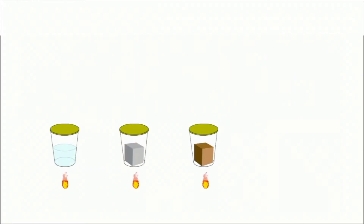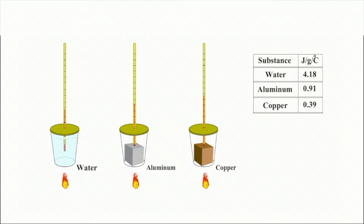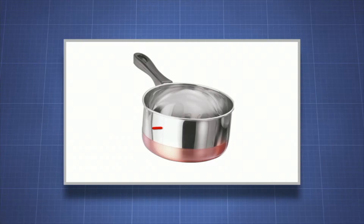The heat capacity of a pan made from copper is lower than a pan made from aluminum. Aluminum has a specific heat capacity of 0.91 joules per gram per degree Celsius, more than twice that of copper, which is 0.39 joules per gram per degree Celsius. Copper will heat faster with a given amount of heat — that is why saucepans often have copper bases. The copper heats up fast, so it's a more efficient material to use for heating food.